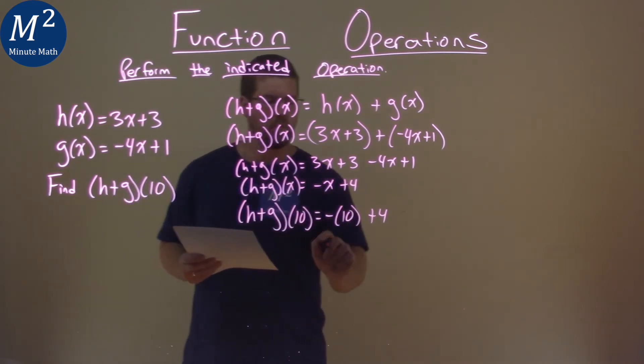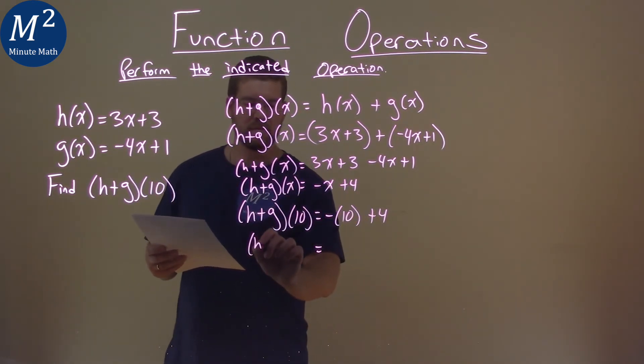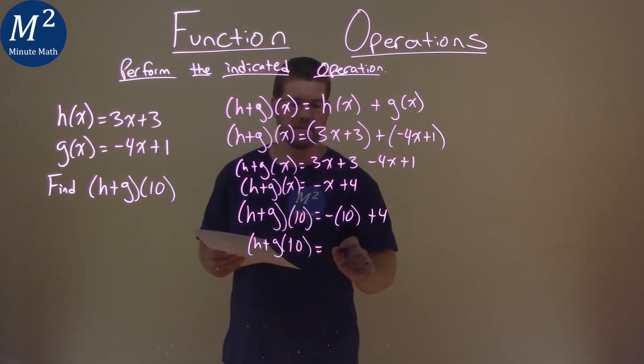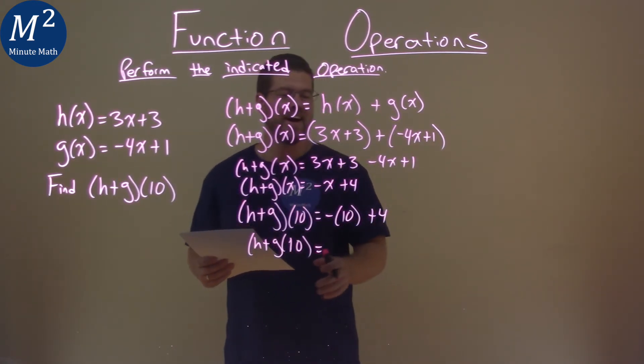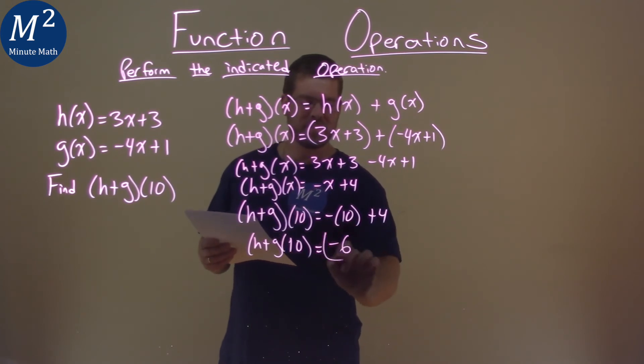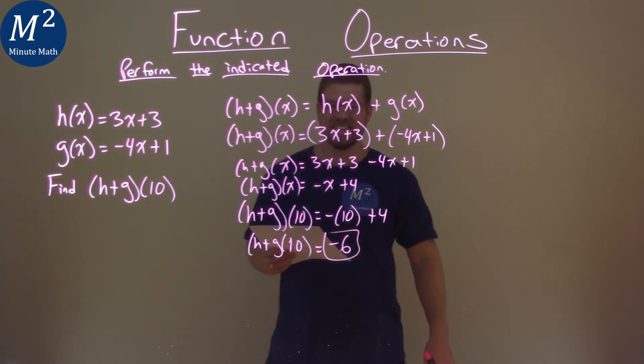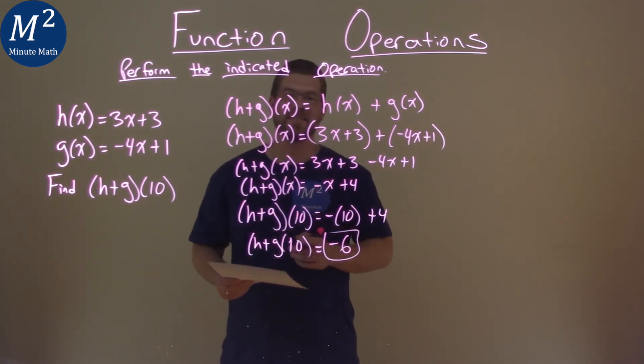Well, what is negative 10 plus 4? Do you know it? Well, negative 10 plus 4 is negative 6. And so our final answer here is negative 6.